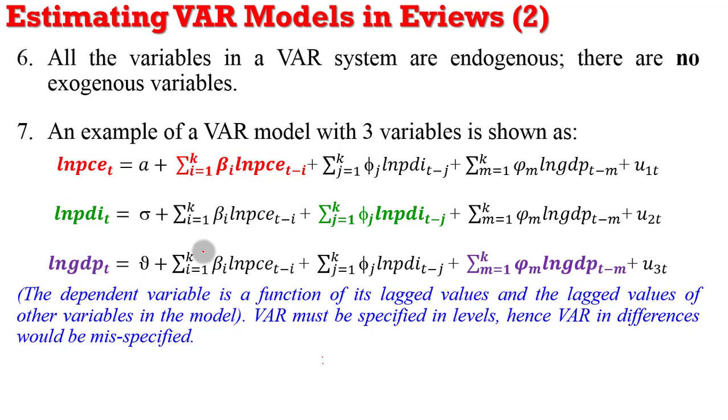So if you have your own variables, simply specify them out in this form. Yours could be three, four, or five variables. Simply specify all your variables in your VAR system in this way. Remember that the dependent variable, as you can see, is a function of its lagged values and also the lagged values of other variables in the model.